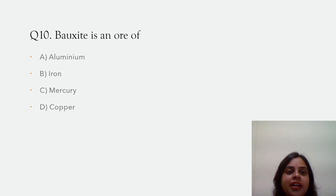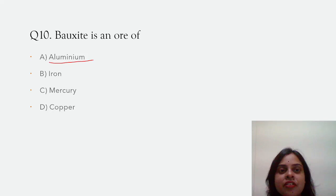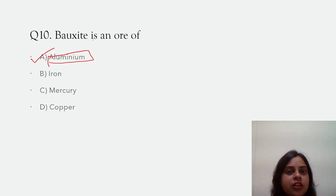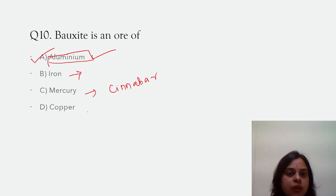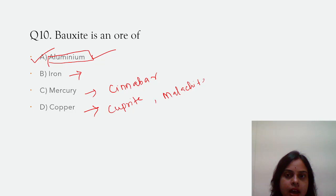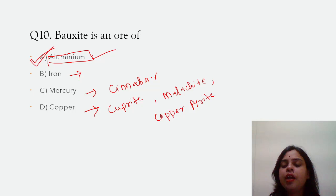Bauxite is an ore of what? The options are aluminium, iron, mercury, and copper. Aluminium is the main constituent of bauxite, so bauxite is an important ore of aluminium. We have already discussed the ores of iron: hematite, magnetite, iron pyrite, etc. For mercury, we have cinnabar as an important ore. For copper, we have cuprite, malachite, and copper pyrite. So the correct answer is aluminium.